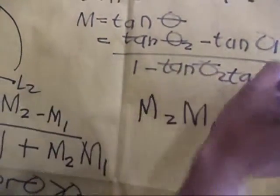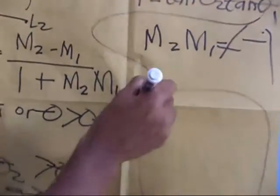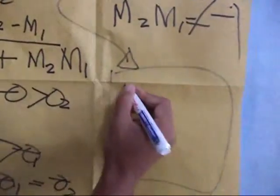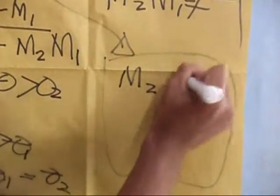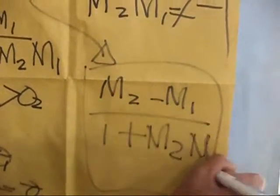To summarize this formula, that equals M2 minus M1, all over 1 plus M2 times M1.